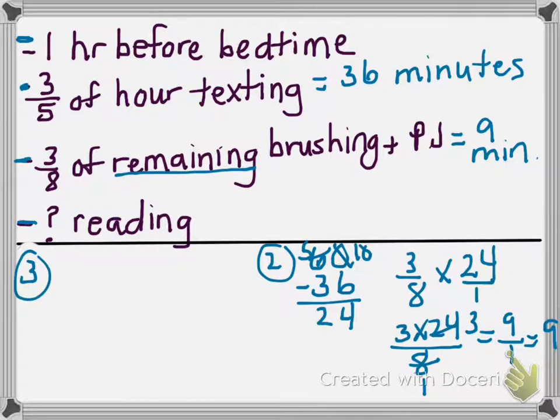Well, I know she's already spent thirty-six minutes texting and nine minutes brushing her teeth and putting on pajamas. So altogether, thirty-six plus nine equals forty-five minutes.